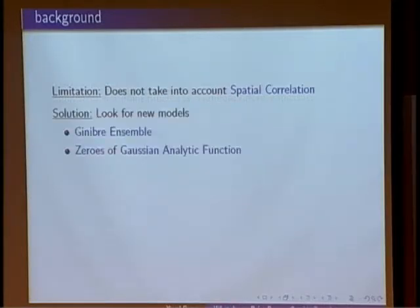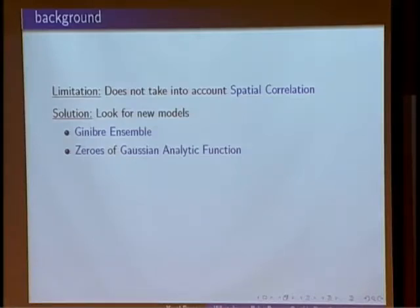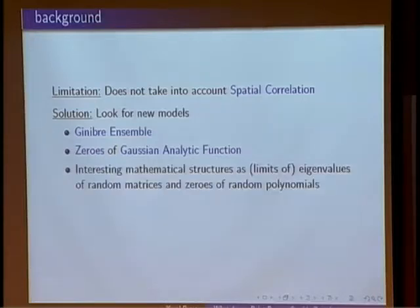For point processes, we can think of it as a collection of points, or we can think of the counting measure that counts for every set how many points land in there — we can think of the point process as a random discrete measure. The Poisson process doesn't have spatial correlations, and we're going to focus on two processes that do have some correlations yet, after a transform, have extreme independence properties: the Ginibre ensemble and the zeros of the Gaussian entire function.